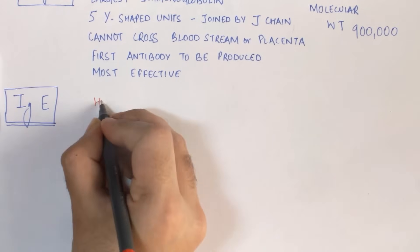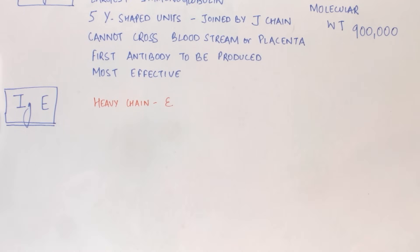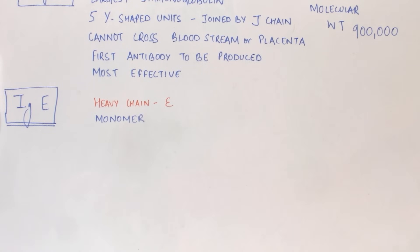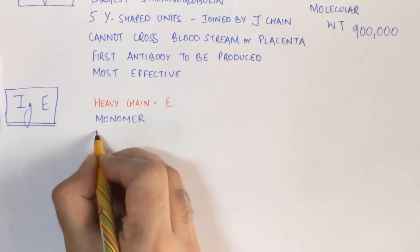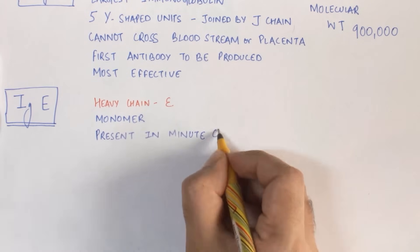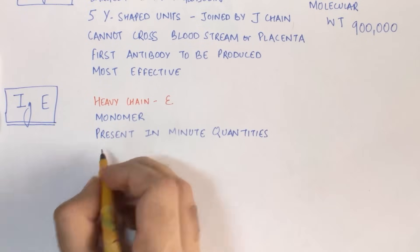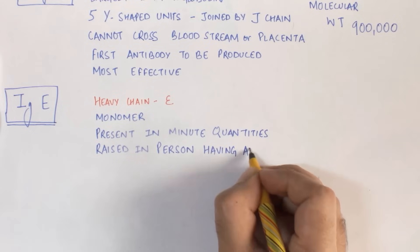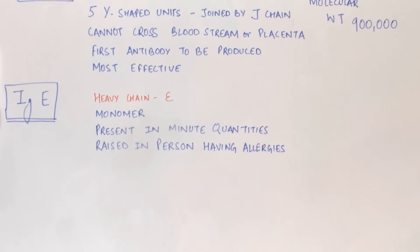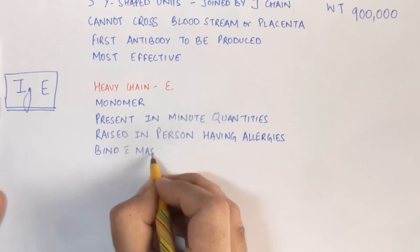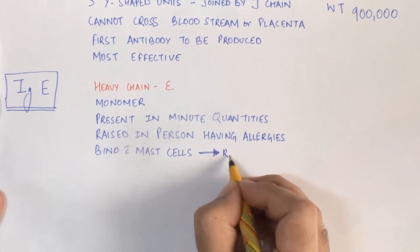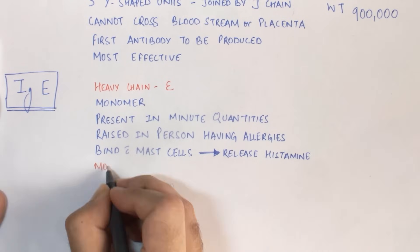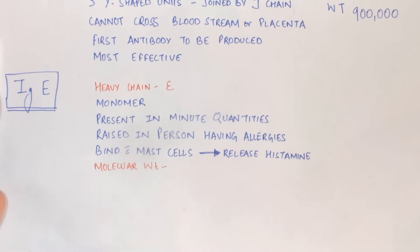The heavy chain present in IgE is of the epsilon type. IgE is also a monomer, and it is present in minute quantities in the bloodstream. IgE is mainly raised in people who have allergies. Its mechanism of action is that it binds to the mast cells and causes the release of histamine from the mast cells. The molecular weight of IgE is 190,000.